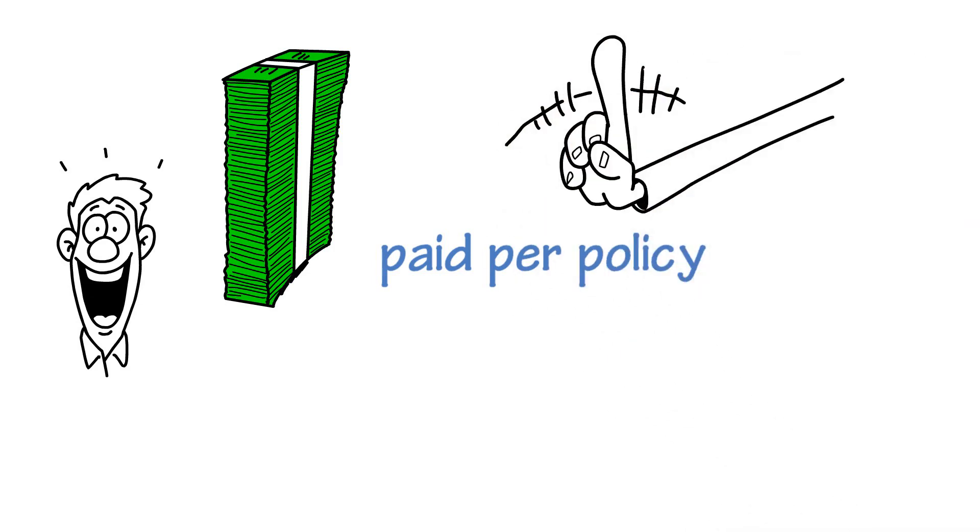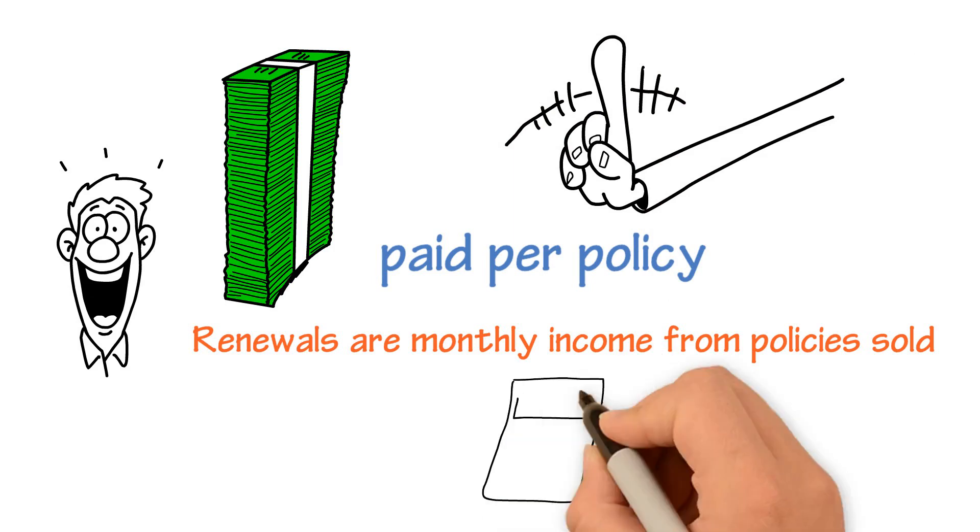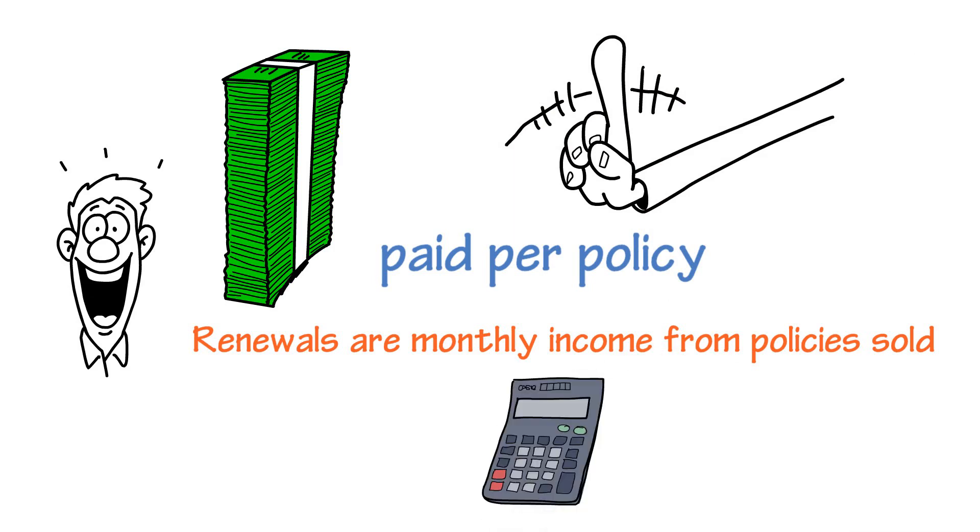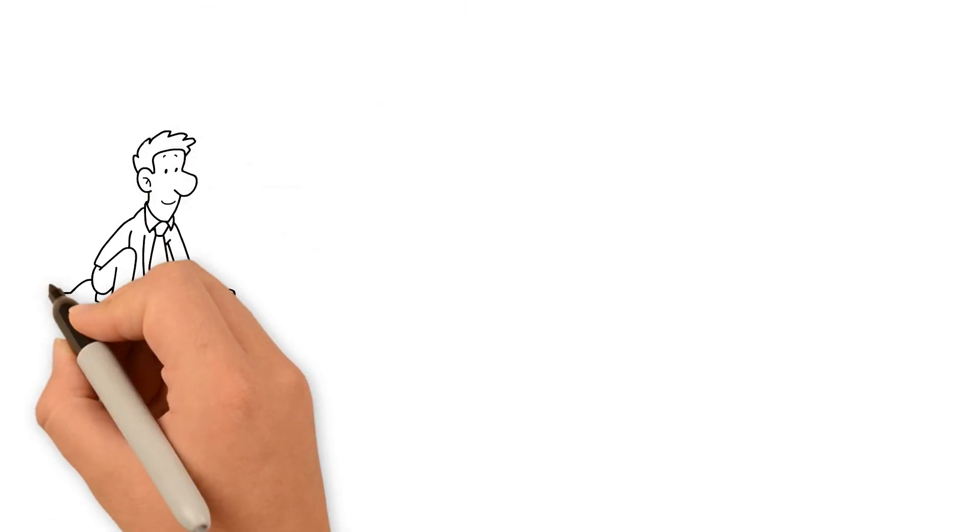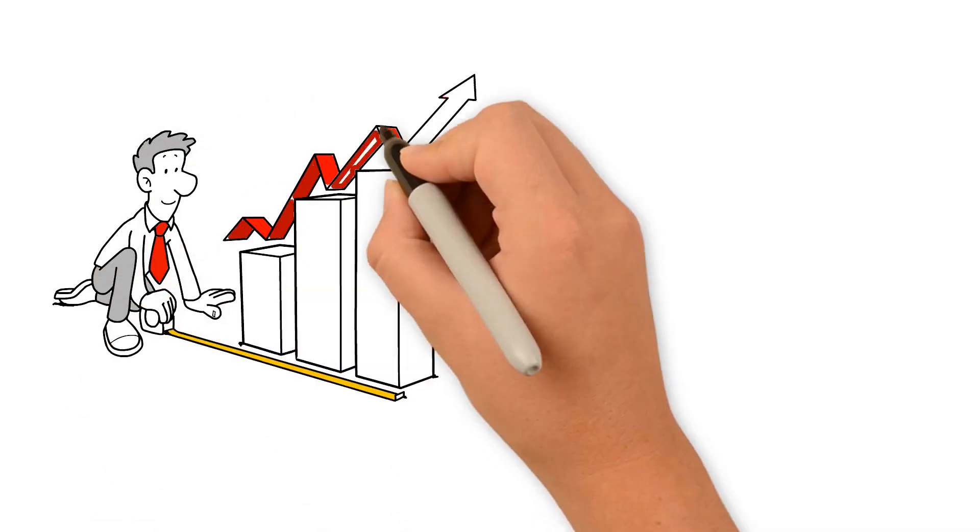You also get paid what we call renewals. Renewals are monthly income from policies sold. The numbers and percentages we are using are close to real numbers, but they're not exact. Renewal percentages increase as you sell.